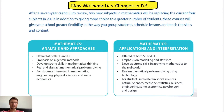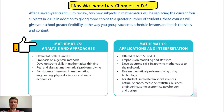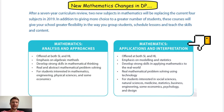Last year was the first year of the new mathematics DP syllabus where they replaced Math HL, Math SL, Math Studies, and Further Mathematics with two courses which are branched into SL and HL. The first course is Mathematics Analysis and Approaches, shortened to Math AA, and the second one is Mathematics Applications and Interpretation, shortened to Math AI.